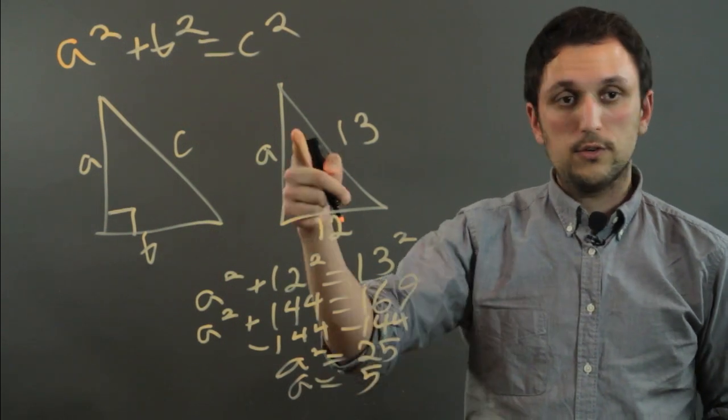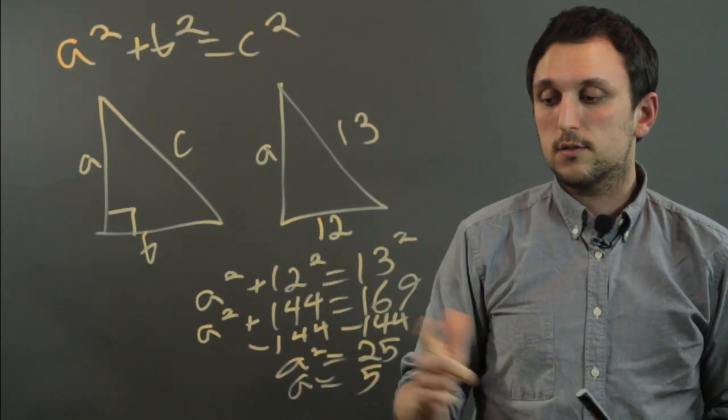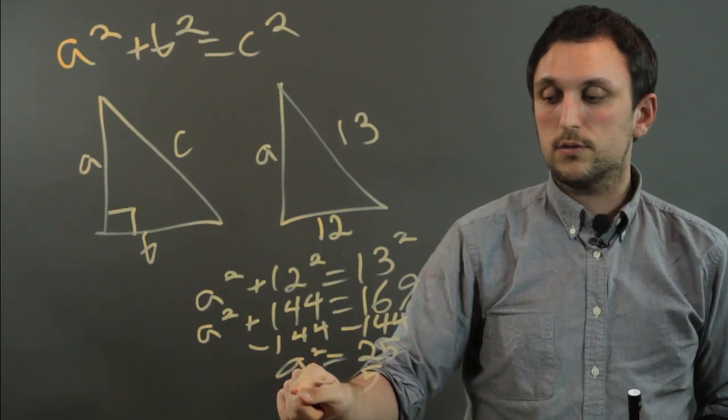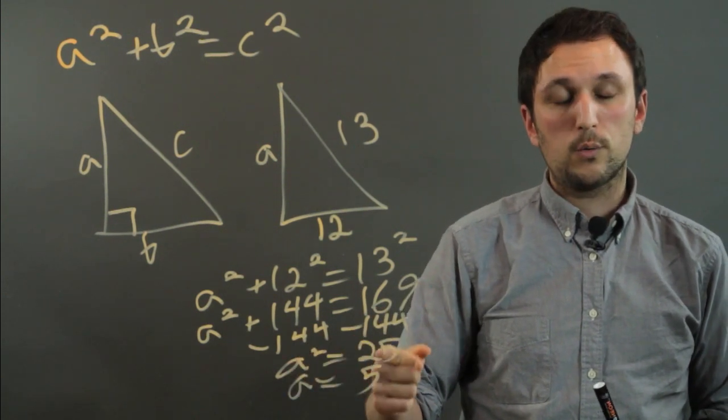Now, this happened to work with all integers, but even if it doesn't, let's say A squared equals 26 in a different problem, then you would still take the square root, and A would equal the square root of 26.